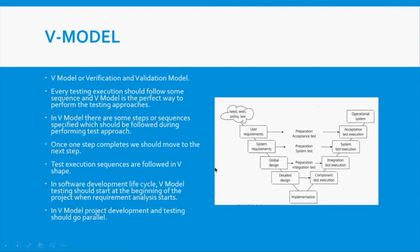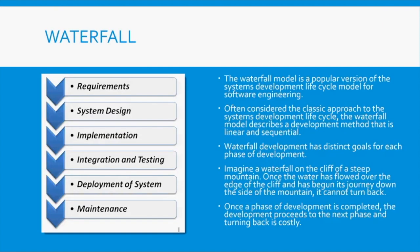In V-model, if you're working on a big product, you gather every requirement for all products, do all design, then go into implementation. In Waterfall it's even more sequential — requirements, system design, and implementation are all done before testing starts. The tester isn't required at the beginning of the project; requirements gathering might take a month, system design another month, then implementation, and only then does testing begin.